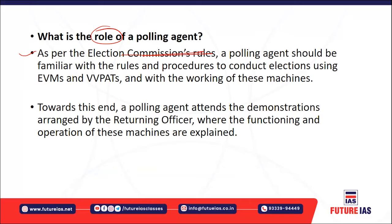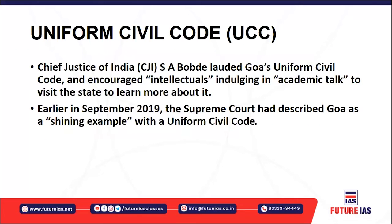As per the Election Commission's rules, polling agents should be familiar with the rules and procedures for conducting elections. They should also be aware of how Electronic Voting Machines (EVMs) and Voter Verified Paper Audit Trail (VVPAT) machines work. These polling agents attend demonstrations arranged by the returning officer of the respective booth to understand how the machines function. If there is any problem with those machines, they can flag issues so the machines can be replaced.